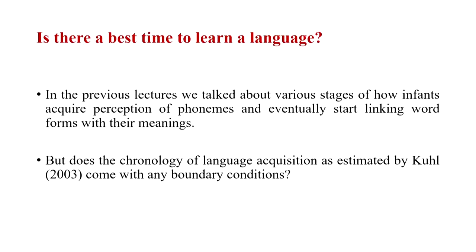In the last lecture we talked about various stages of language acquisition, mainly with a focus on first language acquisition, but also keeping an eye on how individuals acquire their 2, 3, or 4 languages simultaneously. One very interesting aspect of this exercise is the chronology of how this happens and whether this chronology has any boundary conditions.